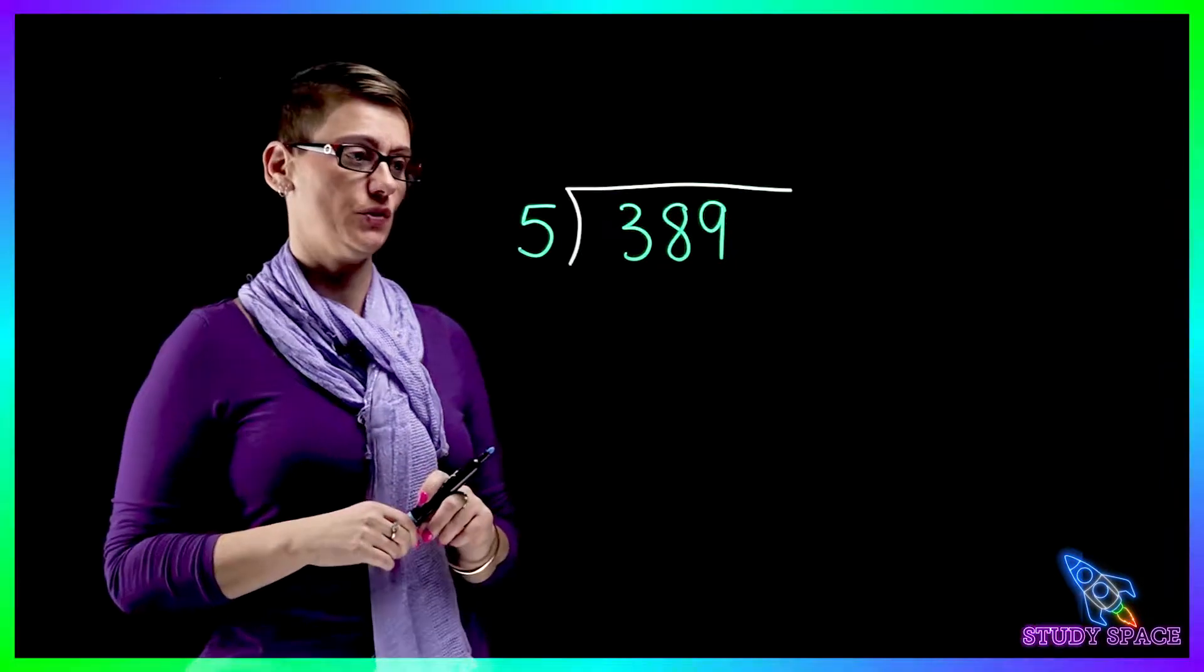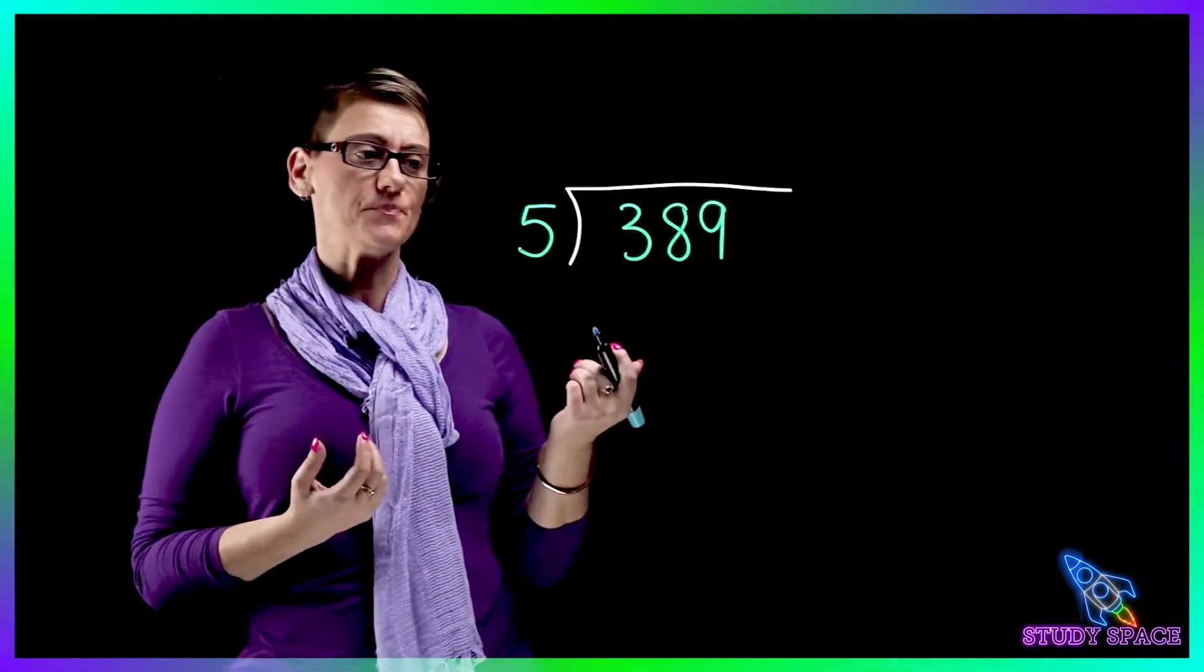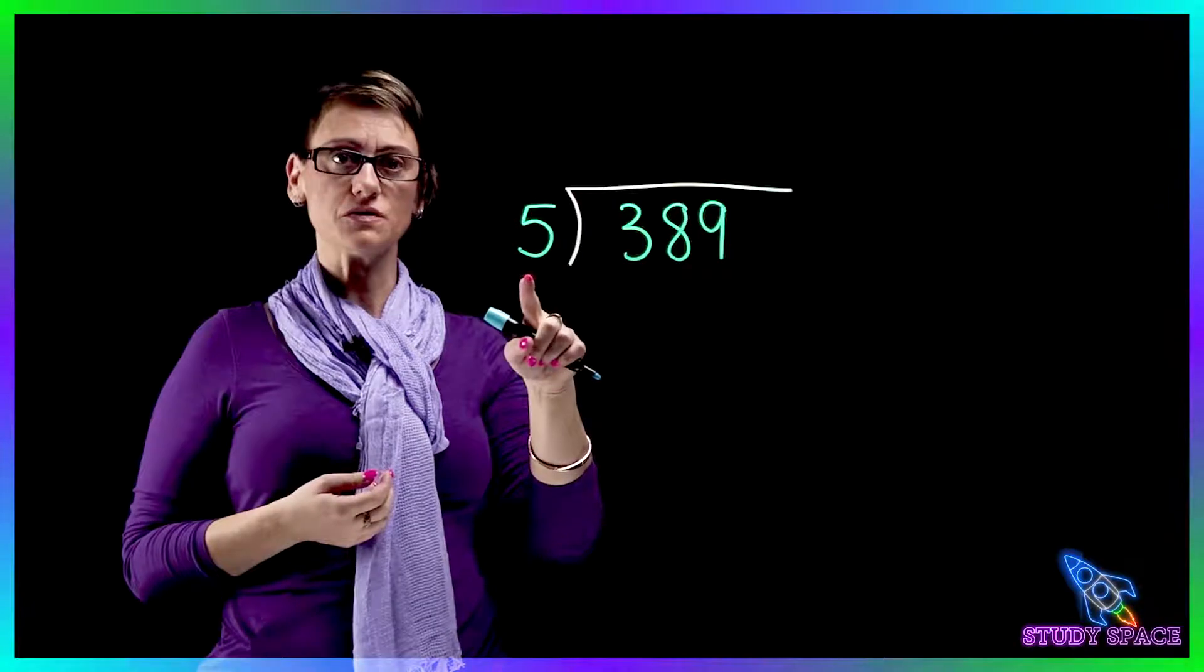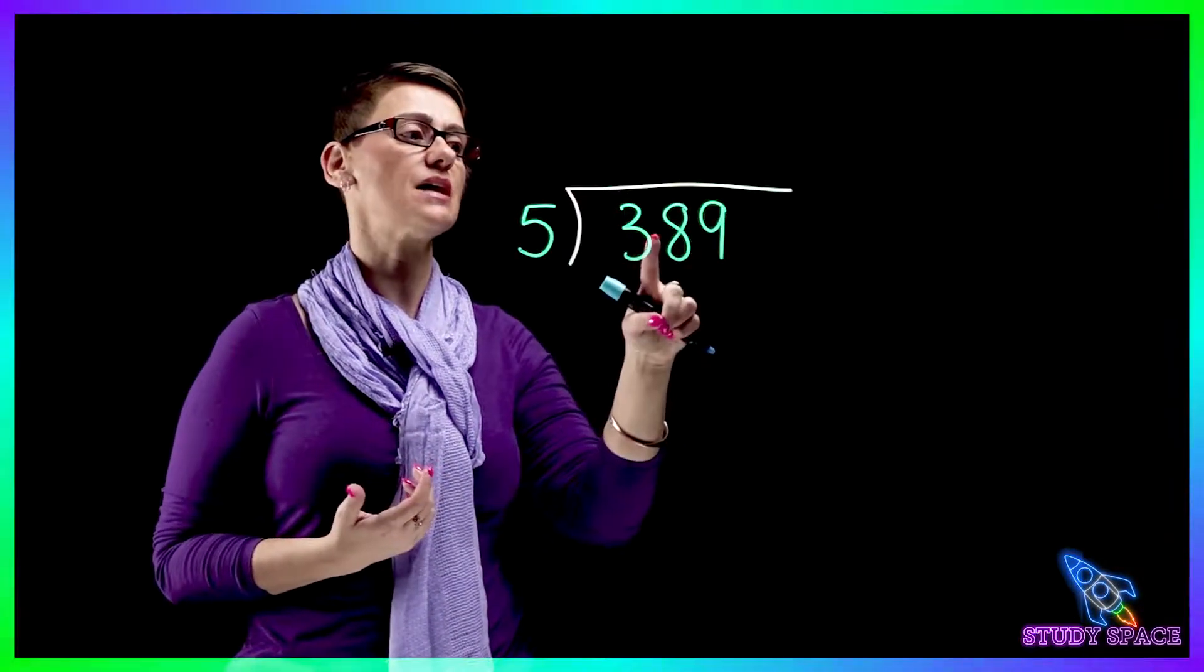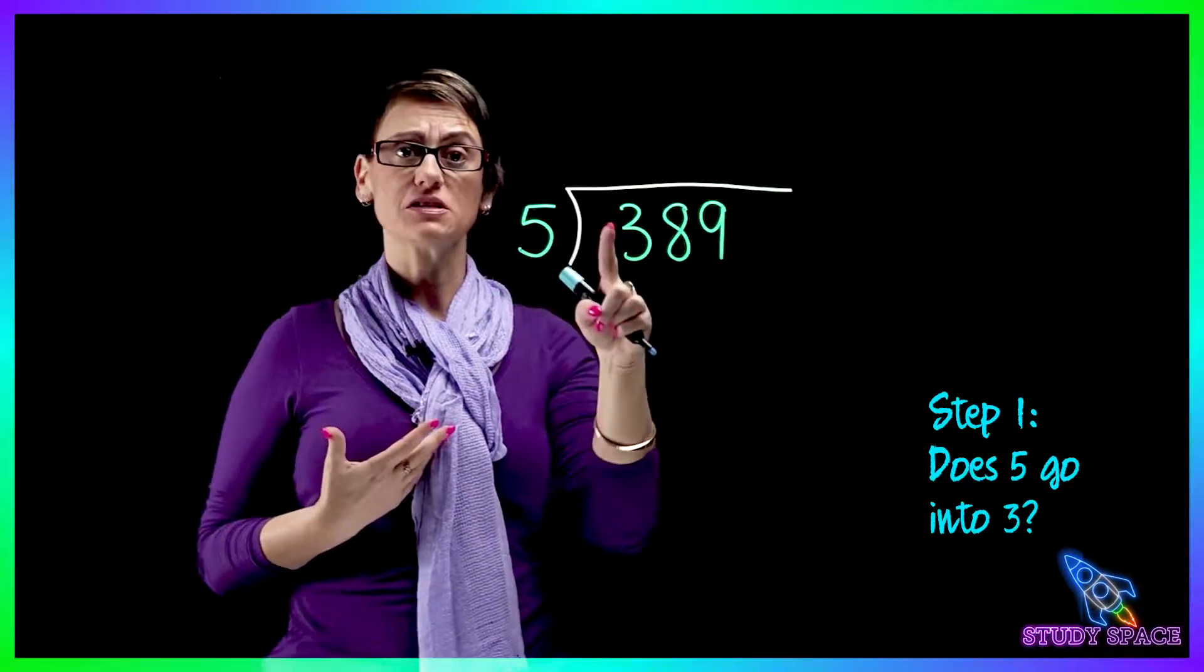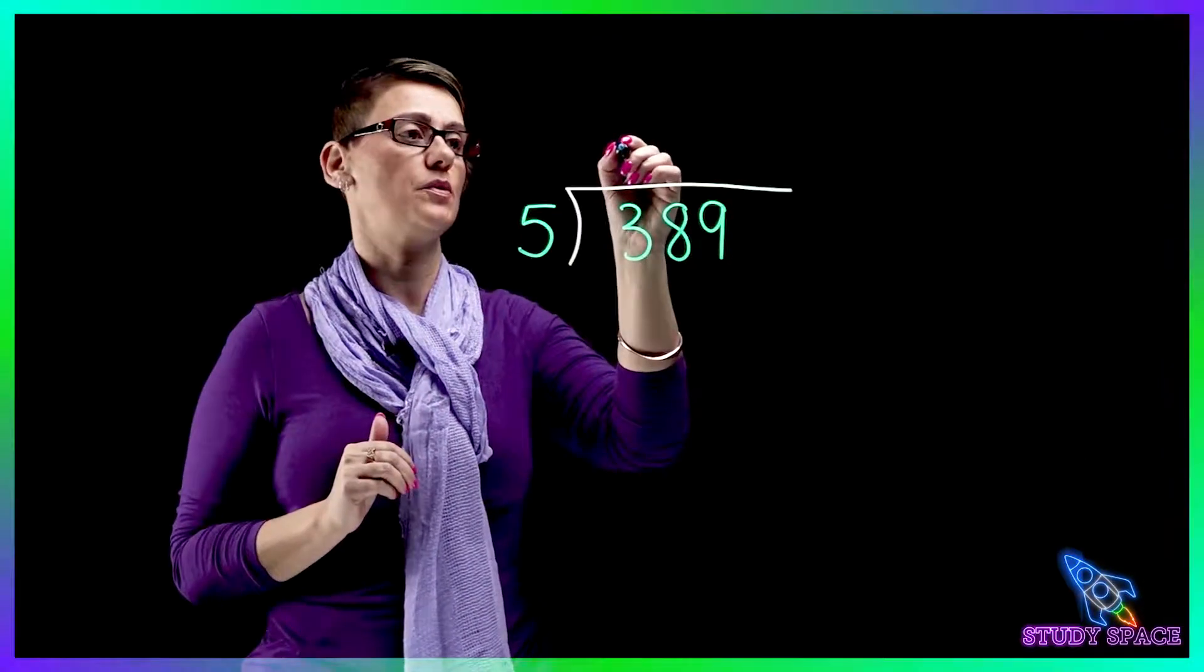So let's have a look at our next question boys and girls. So what's it asking? It's asking how many fives go into 389. So can 5 go into 3? Can't. So we'll put a dot there.